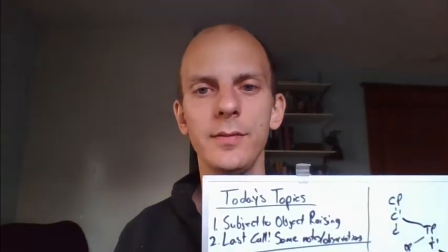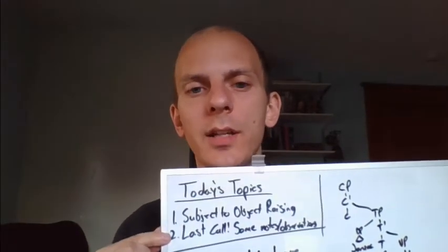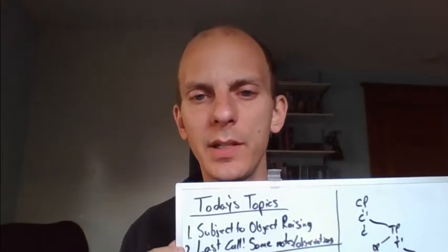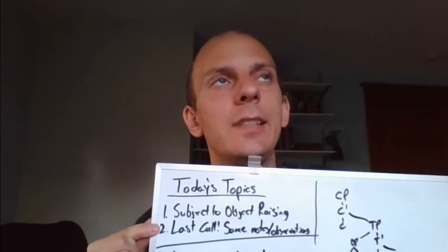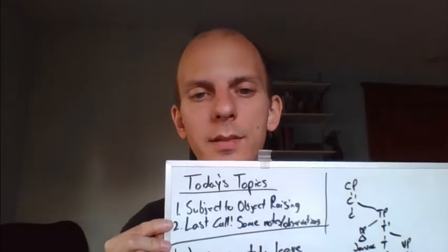Today we're going to wrap up some things. We have some stuff to cover from Monday's lecture that we didn't quite get to. We were looking at these odd predicate types - different types of embedded non-finite clauses. We're going to continue that and look at our last type: the subject-to-object raising type of sentences. Then in the second half of lecture I have a few notes, some trouble spots I've seen students struggling with, to draw those to your attention so you can focus on them.